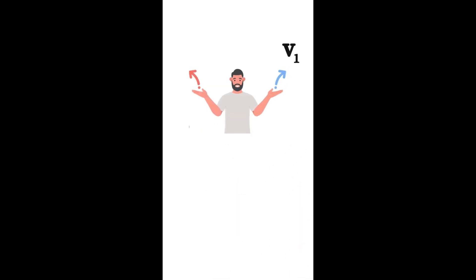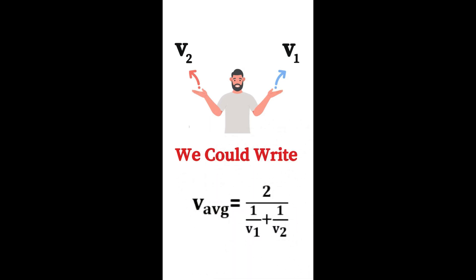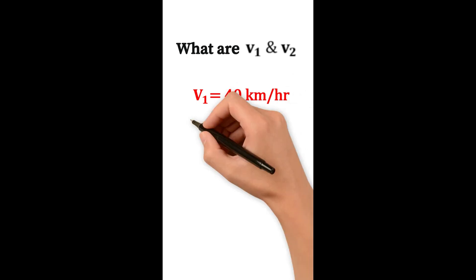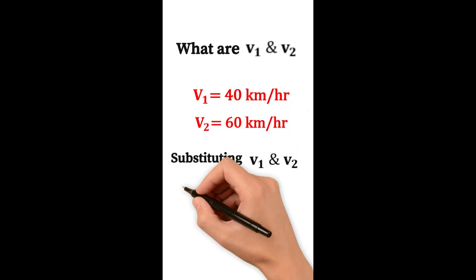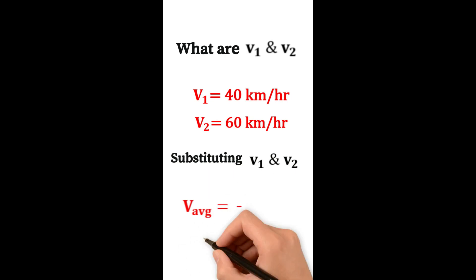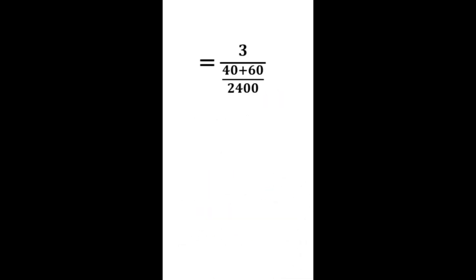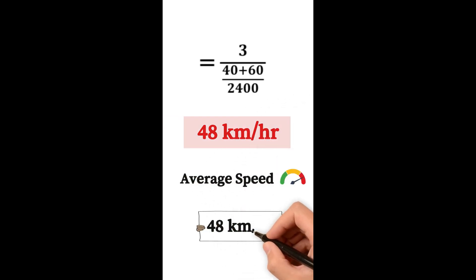Since we have two cases, v_average = 2 divided by (1/v1 + 1/v2). Here v1 = 40 km/h and v2 = 60 km/h. Substituting: v_average = 2 / (1/40 + 1/60). Resolving this gives 48 km/h. The average speed in this case is 48 km/h.